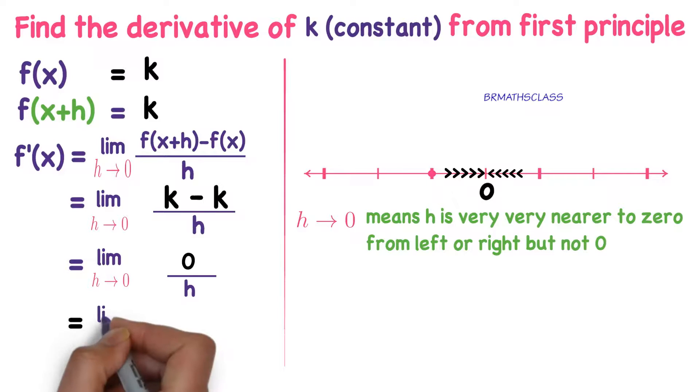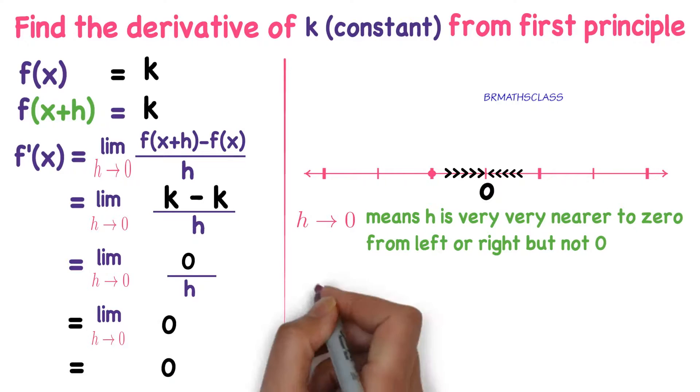You observe here, limit h approaches to 0, denominator is not 0. Denominator h is very very nearer to 0 but not 0. So 0 by h is 0. We know that limit h tends to 0, 0 is 0 only.